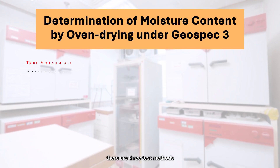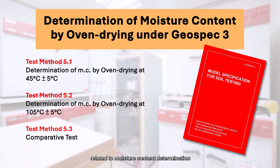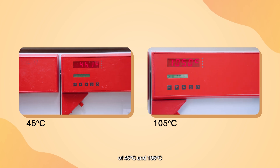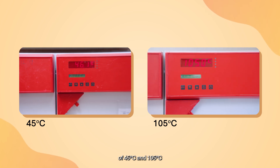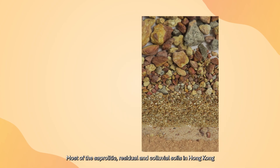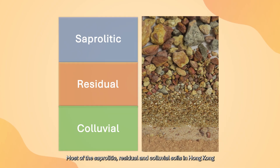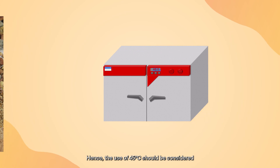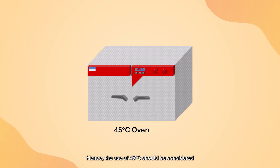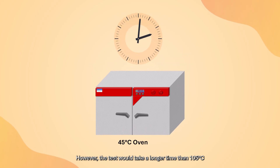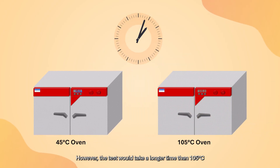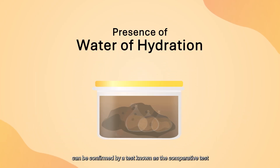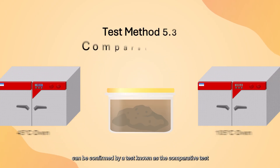In GeoSpec 3, there are three test methods related to moisture content determination. The definitive methods use an oven temperature of 45°C and 105°C. Most saprolitic, residual, and colluvial soils in Hong Kong contain varying amounts of water of hydration; hence, the use of 45°C should be considered, though the test would take longer than at 105°C. In case of doubt, the presence of water of hydration can be confirmed by a test known as the comparative test.